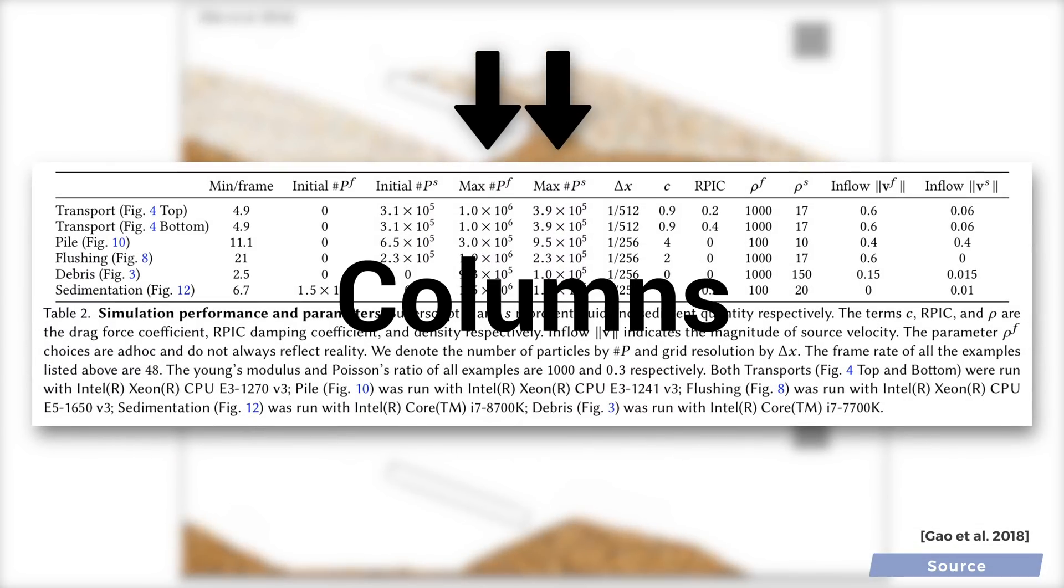These two rows show the number of particles in the simulation in the worst case scenario, and as you see, some of these incorporate millions of particles for the fluid, and many hundreds of thousands for the sediment.